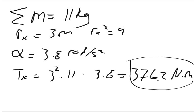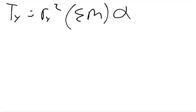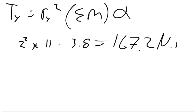About the y-axis, the torque in the y-axis, the sum of the masses is going to be the same because the masses don't change. The only thing that changes is the radius. So it's going to equal the radius of y squared times the sum of the masses times the angular acceleration. And so the radius squared is going to be 2 squared times 11 times 3.8, and that equals 167.2 newton meters.